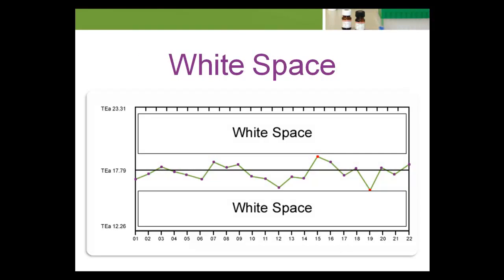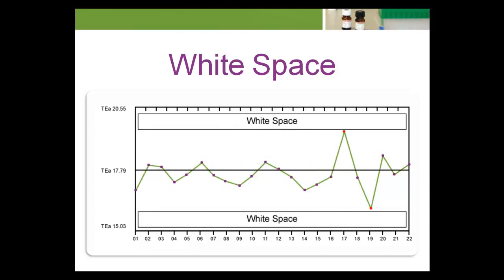What does it mean when there is a lot of white space — the space in which no value lies? This implies the laboratory can move to a higher level of performance, thereby tightening the range of the plot. For example, the same data plotted with a TEA calculated at a higher performance level, BV-optimum rather than BV-desirable, shows considerably less white space while values remain well within the limits.